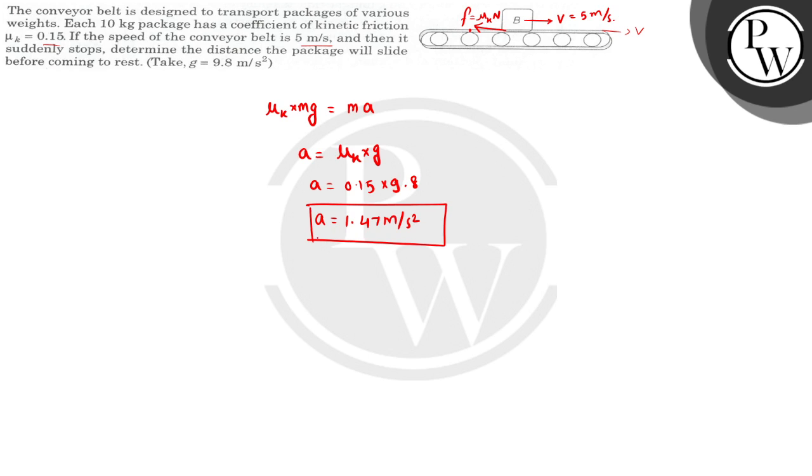Okay. Now, when relative motion stops, final velocity is 0 and initial velocity is 5 meters per second. Let's say time is t. So v equals u plus at. Here acceleration is negative, that is minus 1.47. So 0 equals 5 minus 1.47t. Therefore t equals...